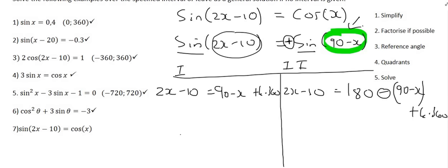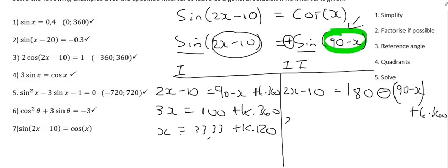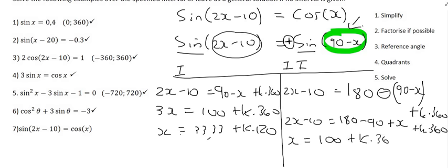Solving the left side: 2x minus 10 equals 90 minus x gives 3x equals 100, so x equals 33.33 plus k times 120. On the right side: 2x minus 10 equals 180 minus 90 plus x, which simplifies to 2x minus 10 equals 90 plus x. Moving everything around, x equals 100 plus k times 360. That is the answer, and this video has now covered all the different types of general solution you will encounter. Go through it a couple of times and you'll see these are the typical general solution types you'll be seeing.